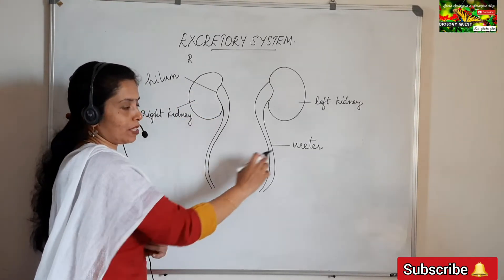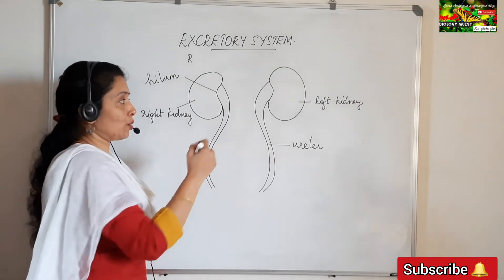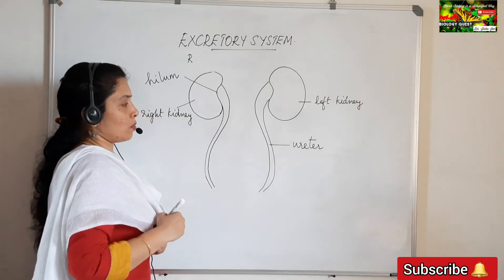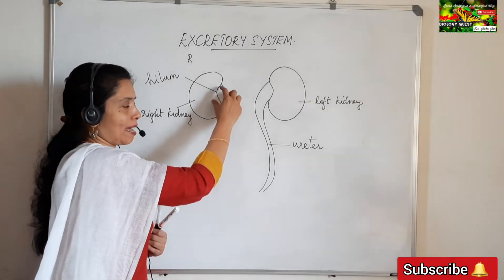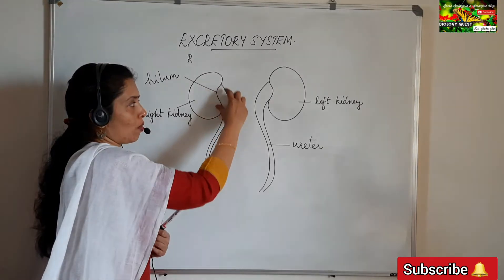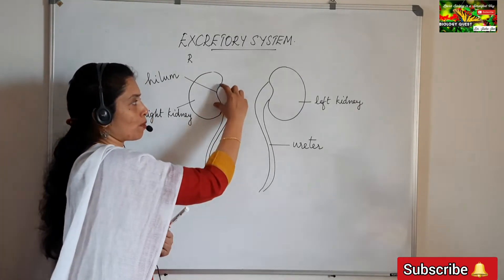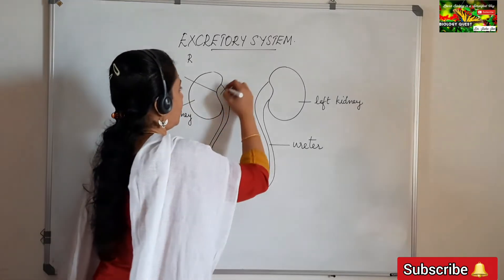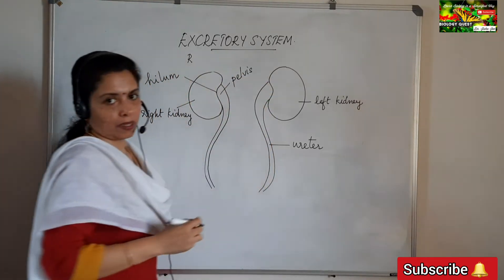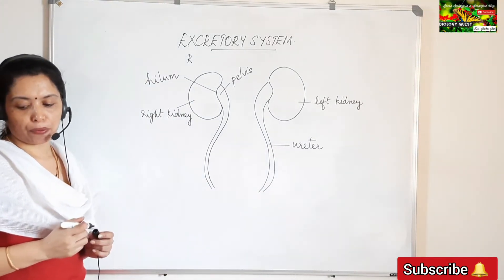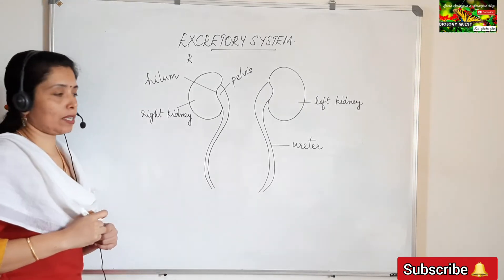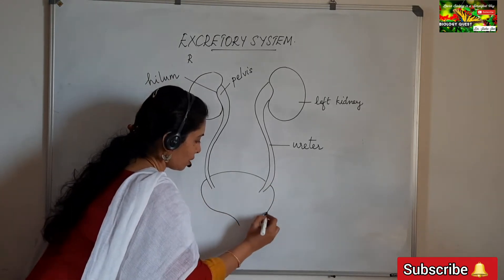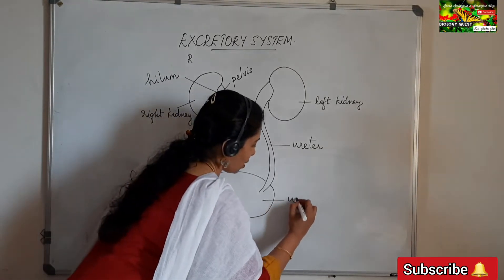The function of the ureter is to carry the urine produced in the kidney to the storage organ, which is the urinary bladder. If you look at the ureter, you can see a difference in diameter — it is broader where it joins with the kidney. This expanded portion of the ureter is called the pelvis. The ureter then opens into the urinary bladder, where urine is stored.